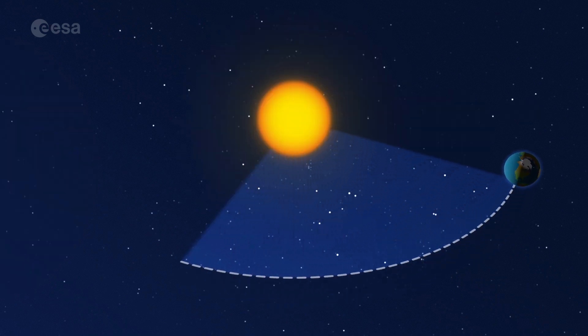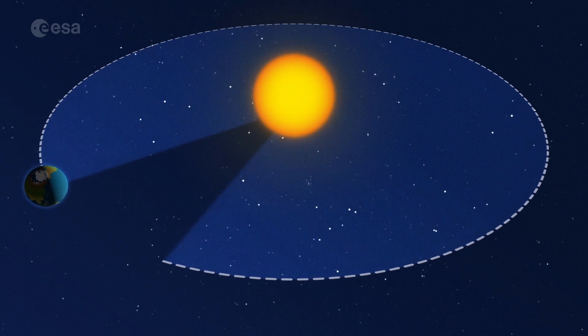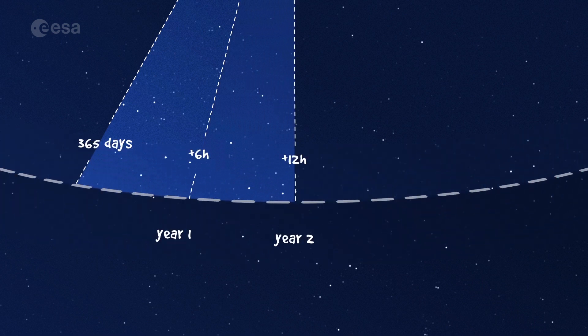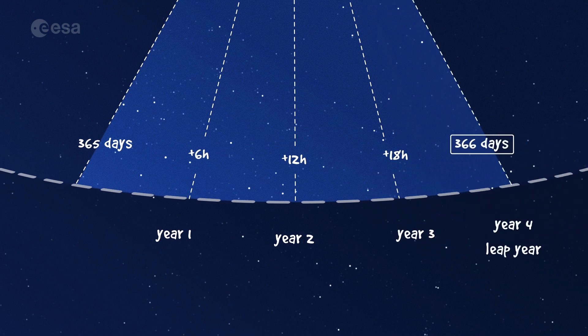As well as spinning on its axis, the Earth orbits the sun. It takes the Earth 365 days and a quarter to make a complete orbit around the sun. So, every four years, you add these quarter days together and have a leap year, which has 366 days.